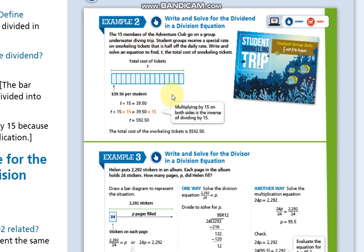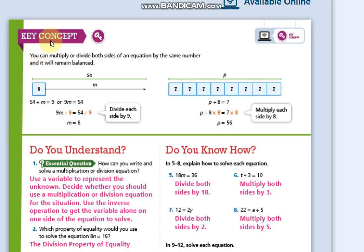In example number two, we have the variable t divided by 15. I want to isolate t. The operation between t and 15 is division, and the opposite of division is multiplication, so I am going to multiply by 15. Dividing by 15 and then multiplying by 15 gives 1, so t times 1 does not change the value. Remember: if you multiply one side, you have to do the same on the other side.